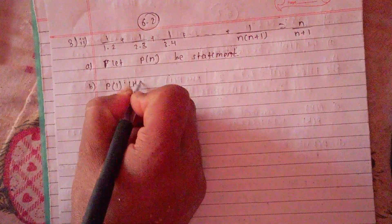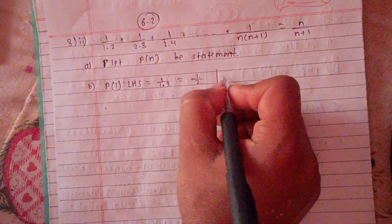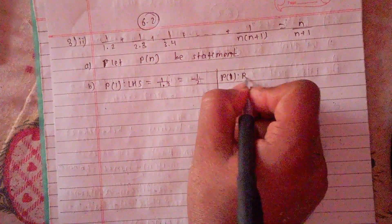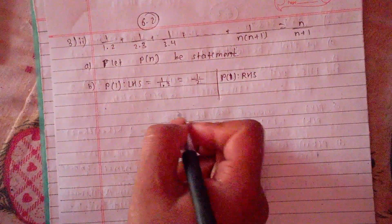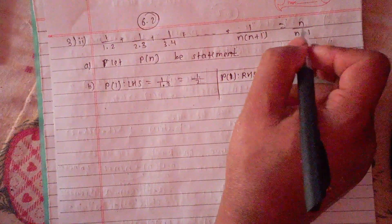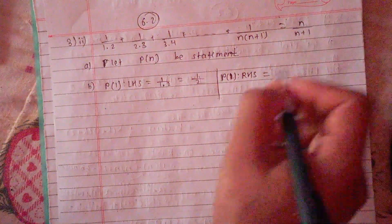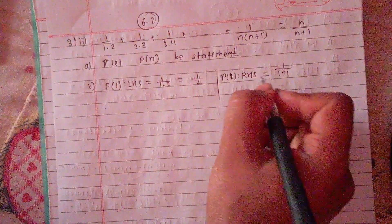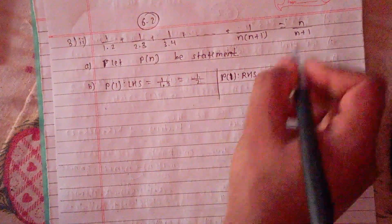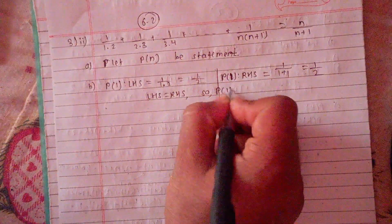What is P(1)? In the series, P(1) is 1/(1·2). We need to show that P(1) equals the RHS. The RHS when n=1 is 1/(1+1) = 1/2, which equals the LHS. So P(1) is true.